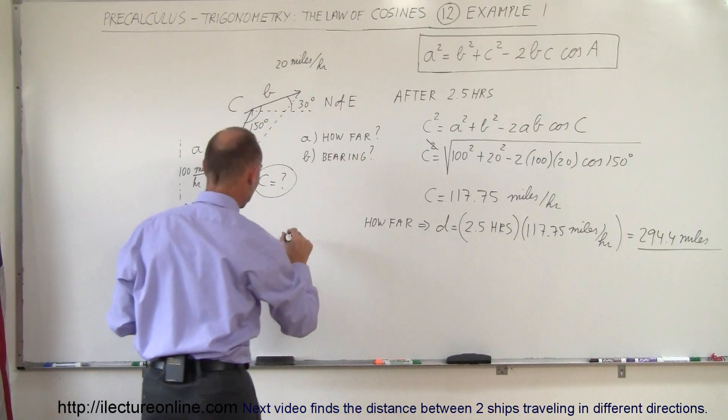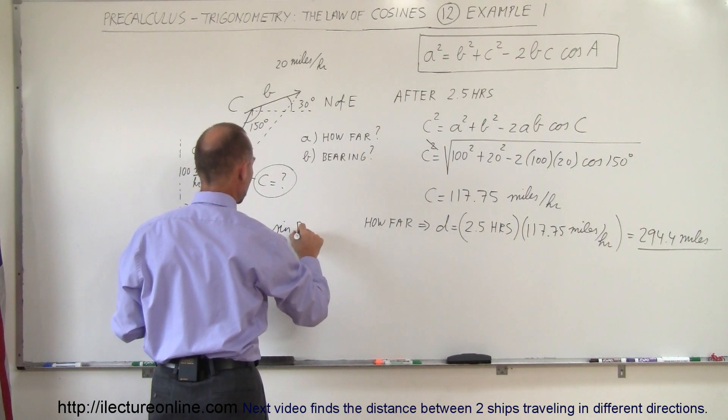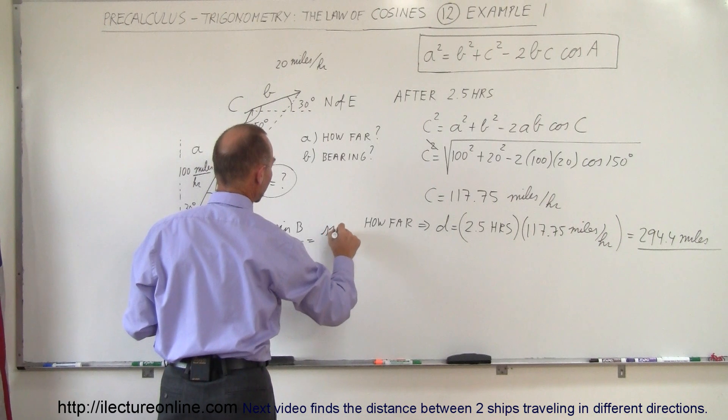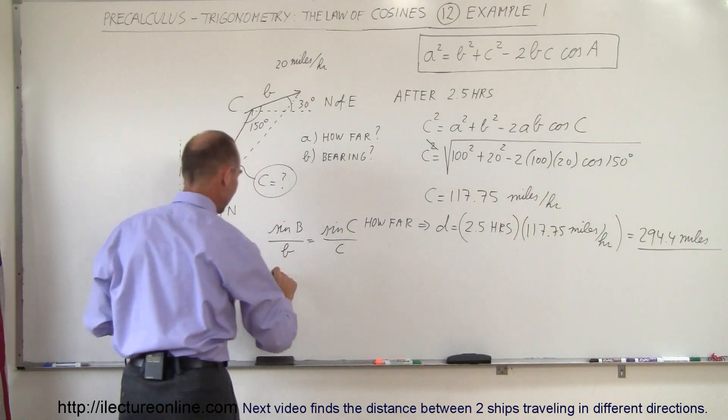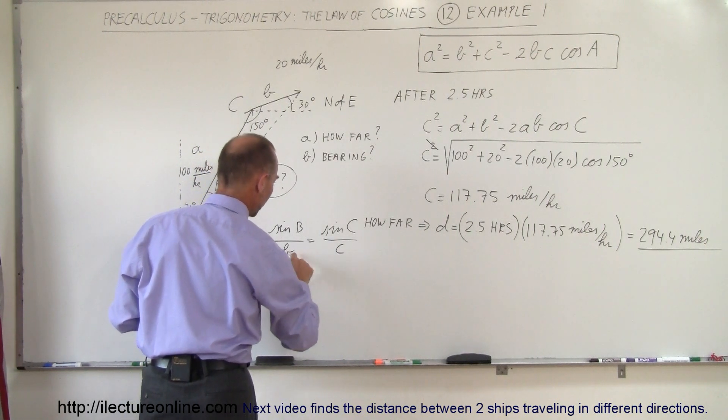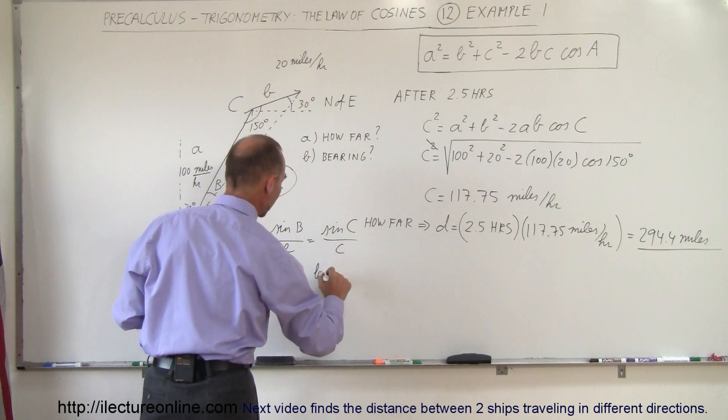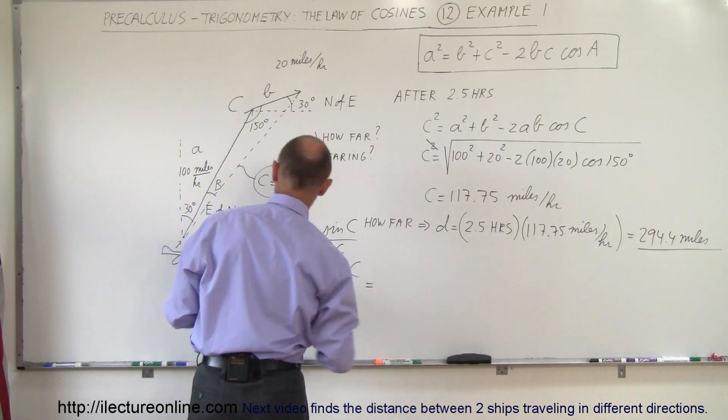So we can say that the sine of B divided by side B equals the sine of C divided by side C. And now we can say that sine of B is equal to, when I bring the B across, B times the sine of C divided by C, and what is that equal to?